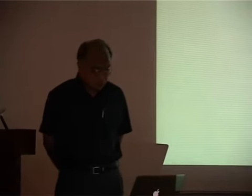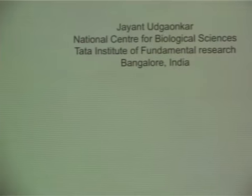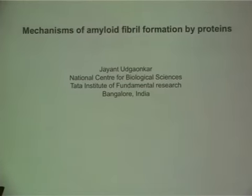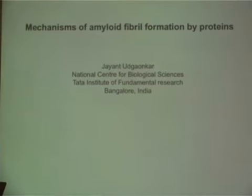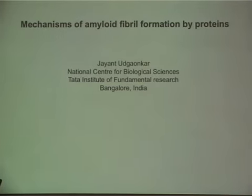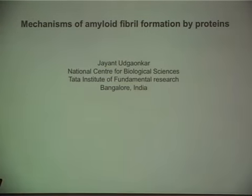This is the second lecture by Jayan on mechanisms of amyloid fibril formation by proteins. A large part of the previous talk was related to phi-value analysis, which his lab does not do. The lab has been trying to use more direct methods for structure formation. When using direct methods in protein folding, one has to use many different probes because the process is heterogeneous, requiring a lot of different types of information, hopefully using site-specific probes.